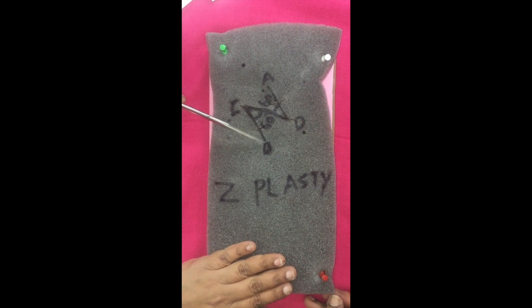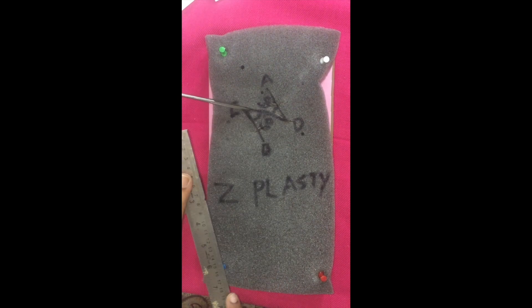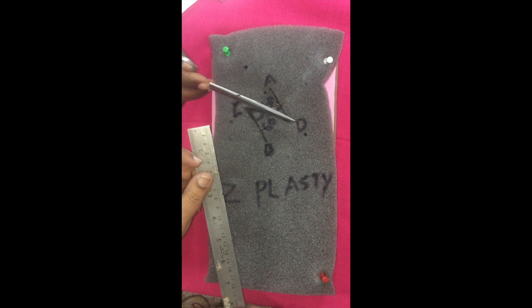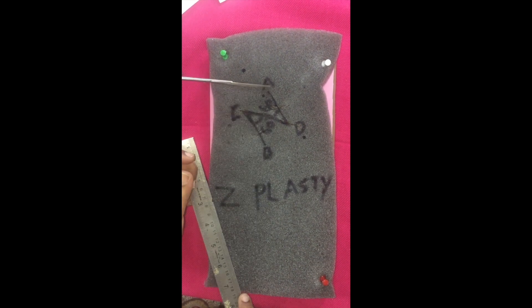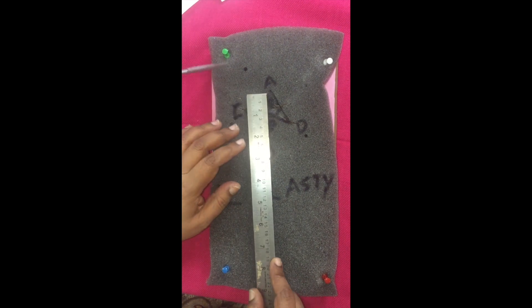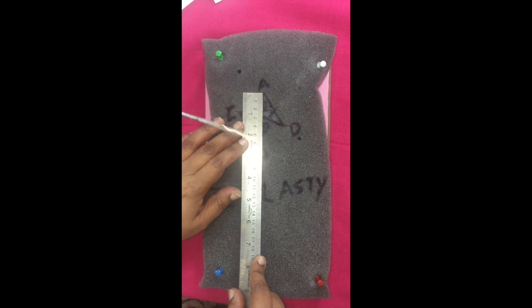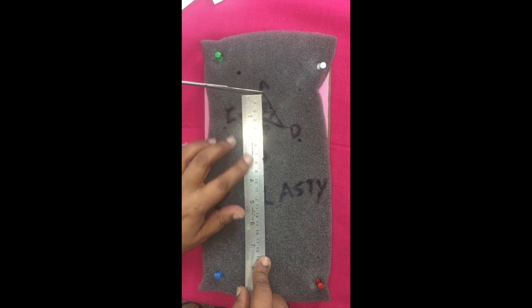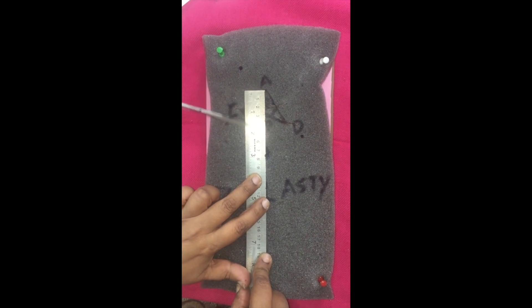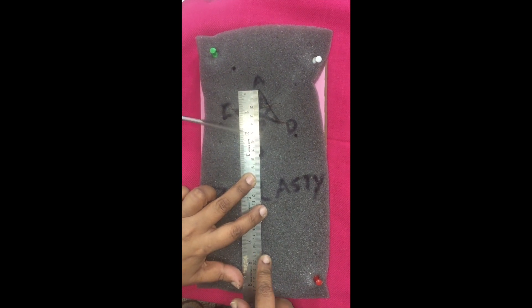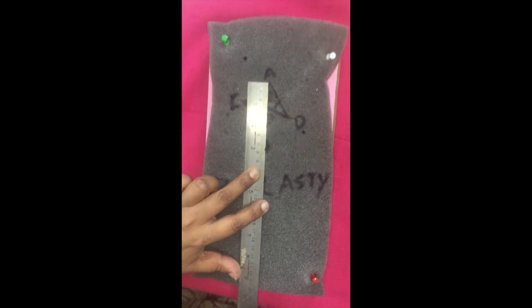Now, we need to measure the length. We have done the suturing. What we had as five centimeters, we measure it now and we find it is eight centimeters. We know that for a 60 degree angle, there will be a 75% increase. I hope you liked the video.